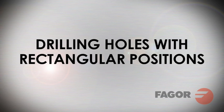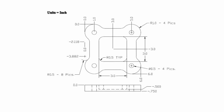We are now ready to program and machine our third operation. From our demo part print, you will see that we have four defined through holes with center locations. Our tool for this operation is a half-inch diameter drill.